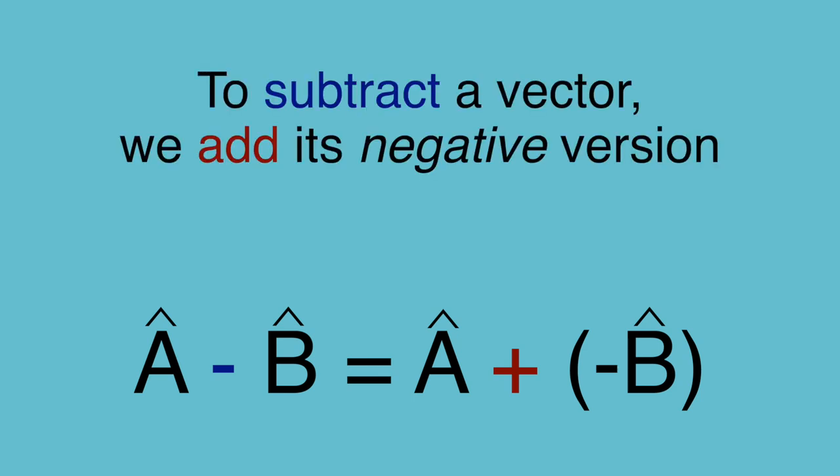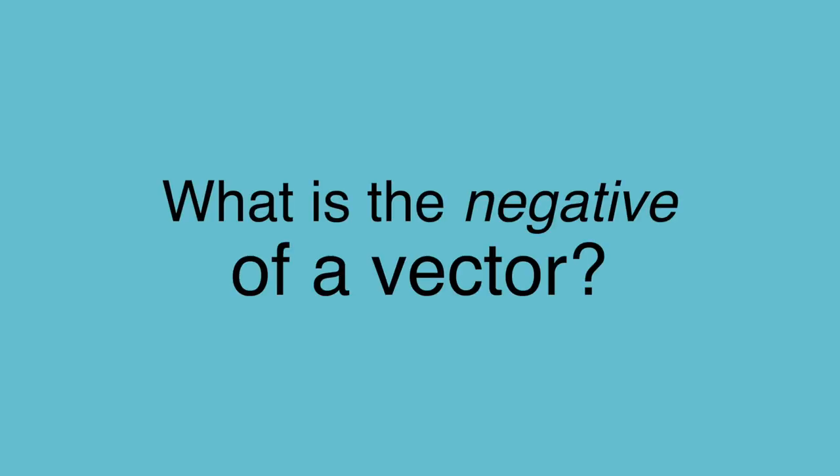What we need to do is add the negative of b dash to a dash. The final question is, what is the negative of a vector? Well it's the same vector turned by 180 degrees. Any vector can be transformed into its negative by flipping it around, reversing the direction, drawing its opposite.